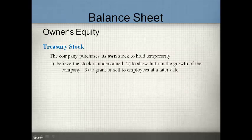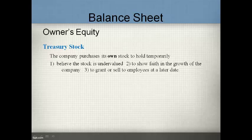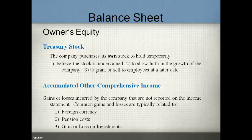Treasury stock is the name used when the company purchases its own stock from investors to hold temporarily. A company generally purchases their own stock when they believe the stock is undervalued, to show faith that the company will grow, or to sell to employees at a later date. Accumulated other comprehensive income represents gains and losses that are not reported directly on the income statement. These gains and losses are reported on the balance sheet and are most often related to foreign currency value changes, pension costs, and investments.